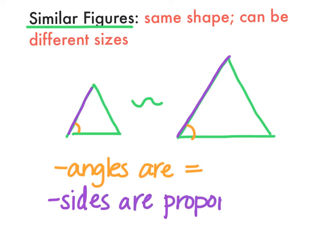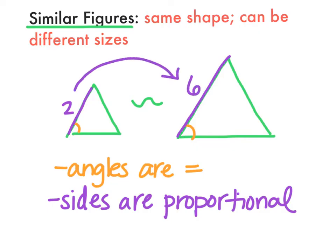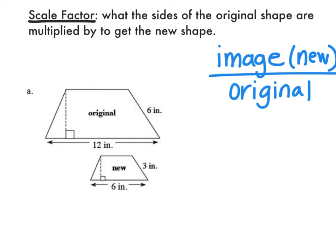What proportional means is that they have a scale factor, and you use that same scale factor on every side. So if the side was 2, and this one's going to be 3 times bigger, this side is 6. If the bottom of this triangle is 4 and I made it 3 times bigger, it might be 12. So the sides have to be proportional and the corresponding angles have to be equal. A scale factor is what the sides of the original shape are multiplied by to get the new shape. A quick, easy way to find scale factor is this fraction: you always take the new side over the original.